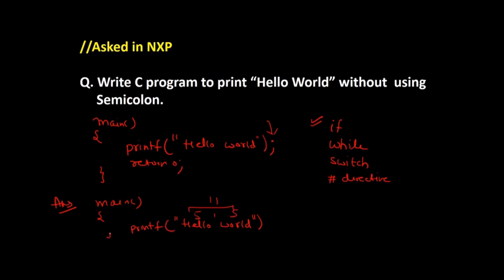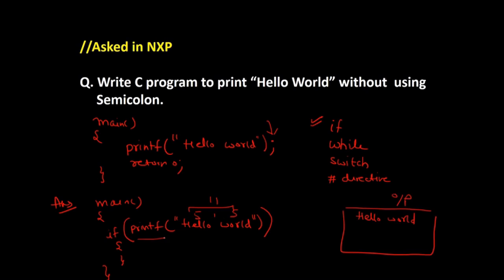So we can put an if and enclose the printf inside it with empty curly braces, then close main. Here, printf will return 11 after printing Hello World. The output will first print Hello World on screen, then return 11. Since 11 is a non-zero value it is considered true, so if-true means go inside the body — but the body has no statements, so nothing else is printed. We come inside the body, do nothing, and exit main. Our output is Hello World.